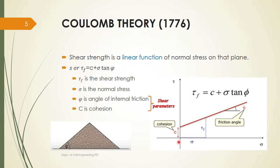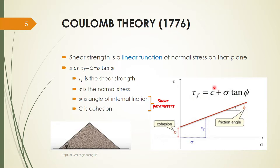In the graph, the x-axis is normal stress and the y-axis is shear stress. If you plot a graph between these two values you get a straight line, and the equation of this line is: τf = c + σ tan φ. Here τf is the shear stress at failure, which is the shear strength (also denoted s). The equation of the failure envelope is τf = c + σ tan φ.